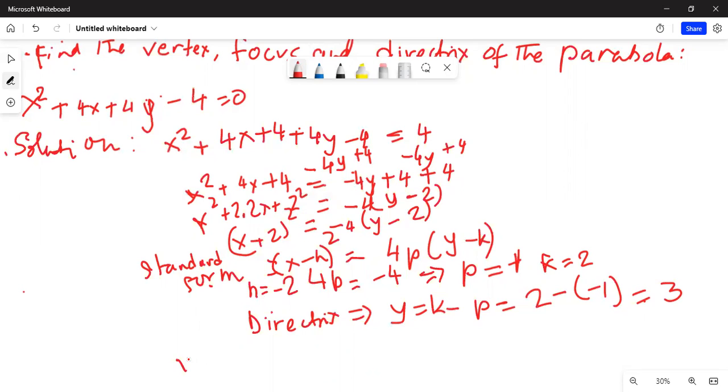Vertex of the parabola is equal to h, k. Therefore, the vertex of the given parabola, since my h is minus 2 and k is 2, is minus 2 comma 2.